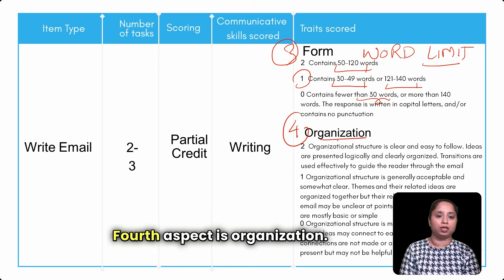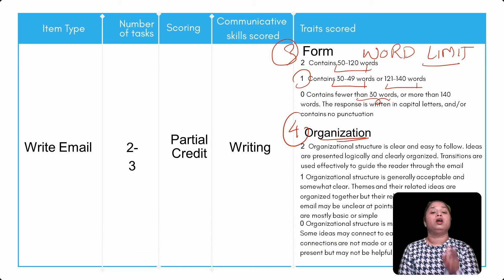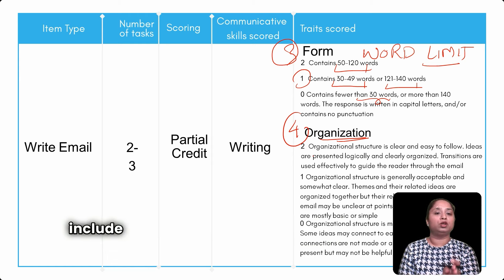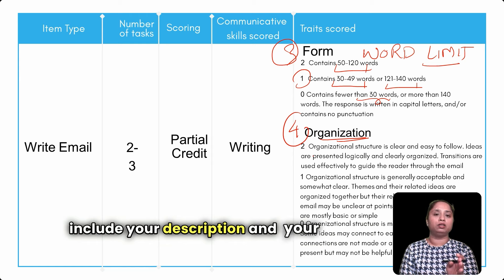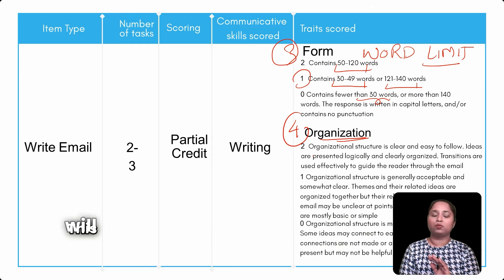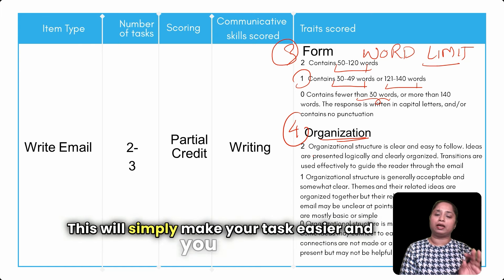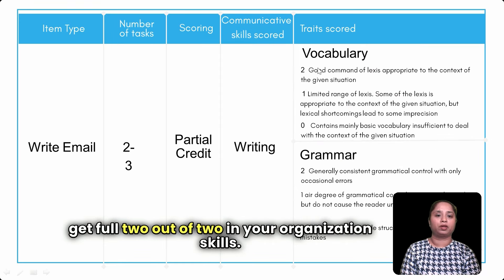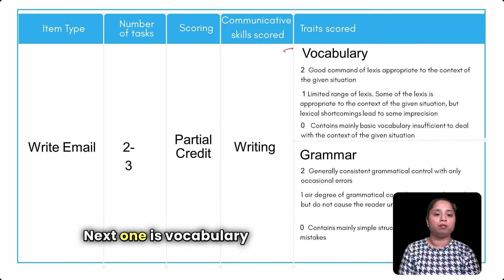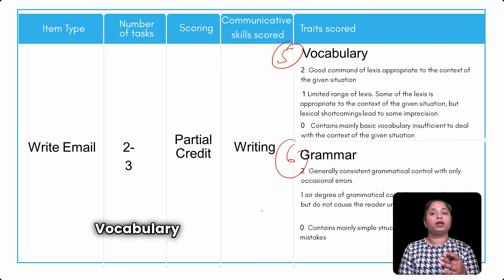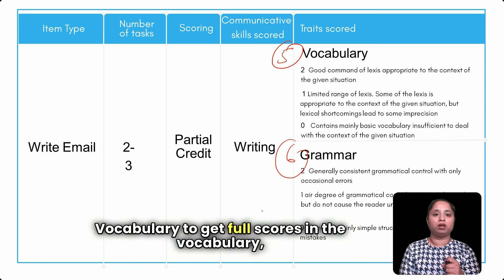The fourth aspect is organization. To get full score in organization, simply include your description and your theme in the same order they are given in the question. This makes your task easier and you can get full two out of two in organization. The fifth aspect is vocabulary and grammar.